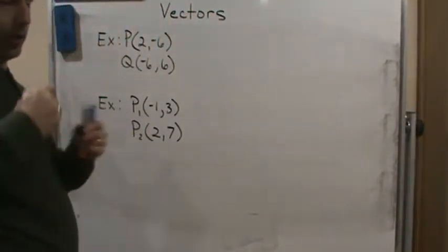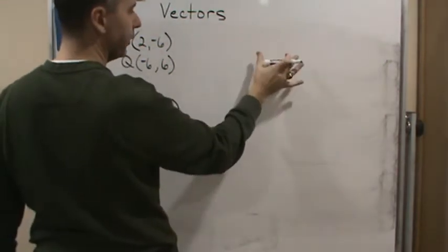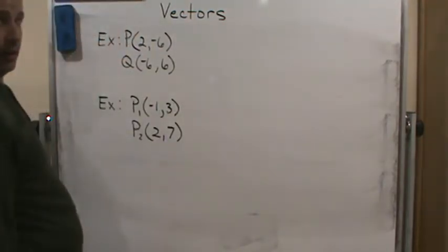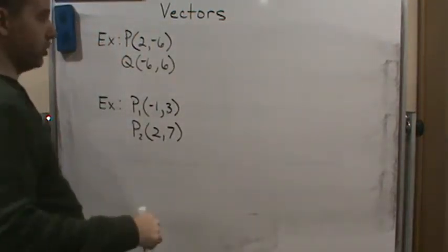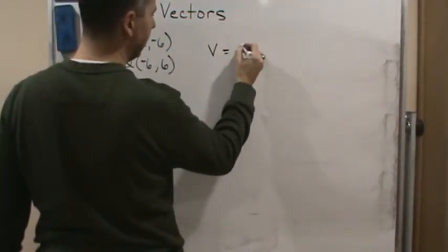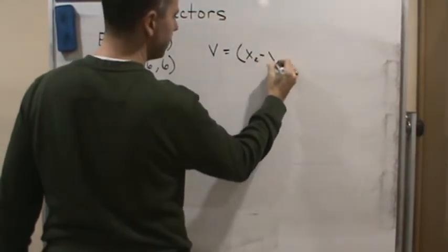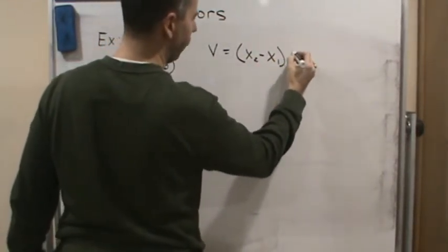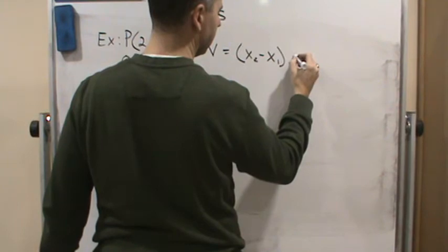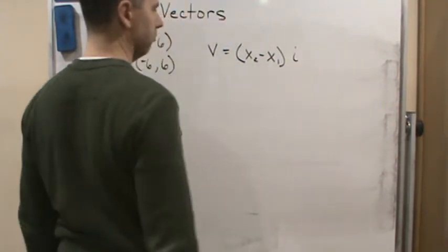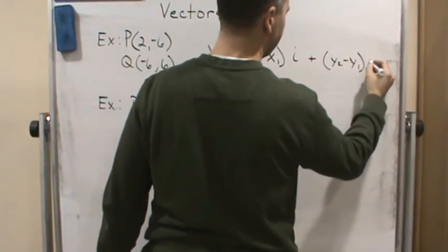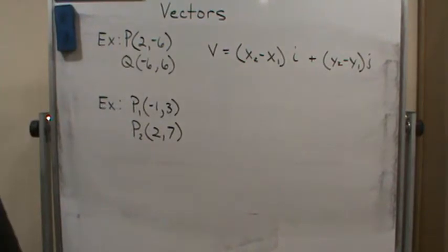So all I'm going to do is use the formula. How do I write a vector? It's a linear combination of the scalar multiples of the unit vectors, the unit component vectors i and j. So in this case, v is going to equal x2 minus x1 times i plus y2 minus y1 times j. That's it. That's all you have to remember.